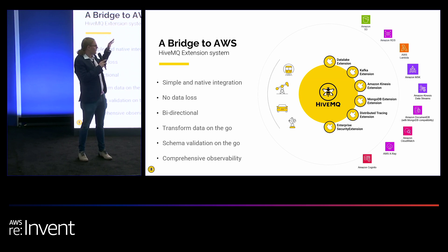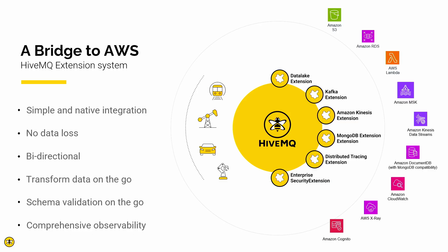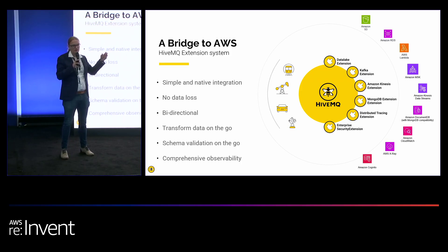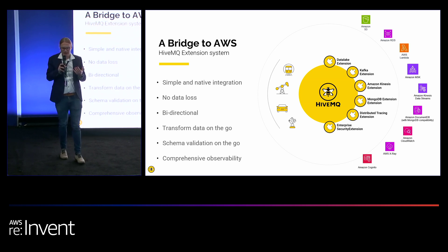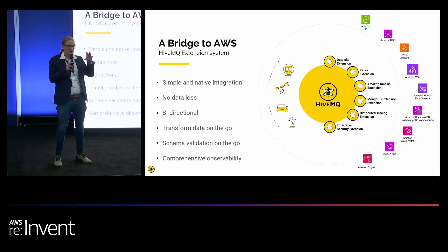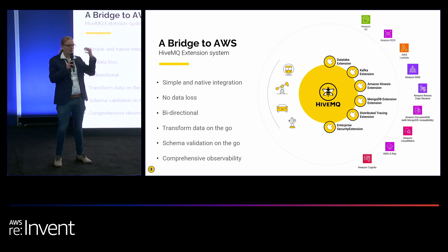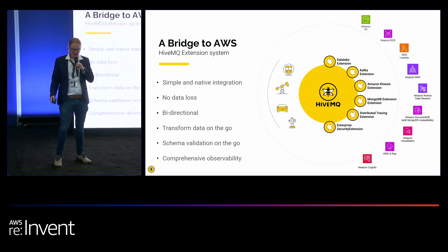Many customers use our data lake extensions to push data natively into S3 buckets. They use Apache Kafka or Kinesis, Lambdas for stream processing, and services like CloudWatch and X-Ray for observability, and Cognito for authentication and authorization — all available out of the box within AWS.